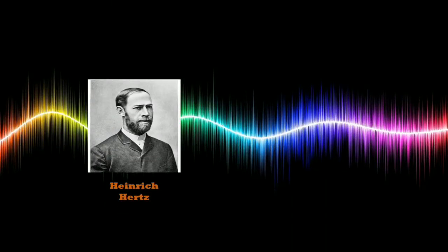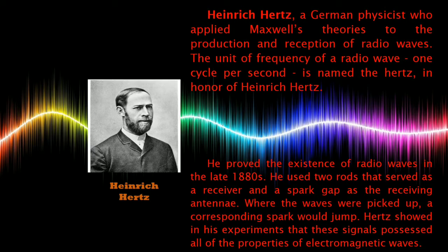Next is Heinrich Hertz. Heinrich Hertz, a German physicist who applied Maxwell's theories to the production and reception of radio waves. The unit of frequency of a radio wave, one cycle per second, is named the Hertz in honor of Heinrich Hertz. He proved the existence of radio waves in the late 1880s. He used two rods that serve as a receiver and a spark gap as the receiving antenna. Where the waves were picked up, a corresponding spark would jump. Hertz showed in his experiments that these signals possess all of the properties of electromagnetic waves.